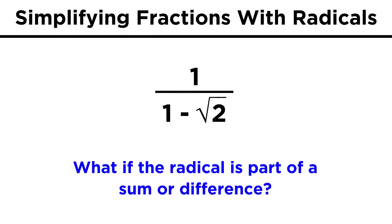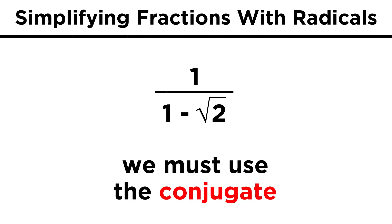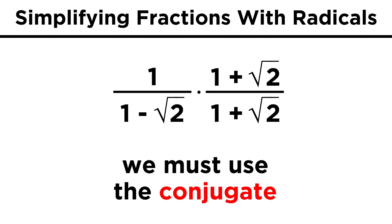If things are a little trickier, and we have one over one minus root two, then instead of simply multiplying by root two over root two, we need to multiply by the conjugate of this expression, because we need to get rid of the radical, so we will multiply by one plus root two over one plus root two.